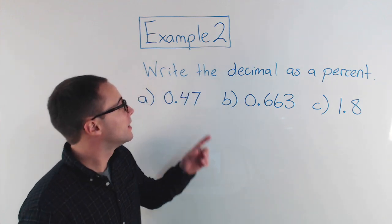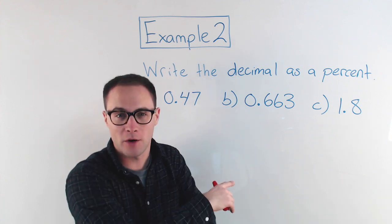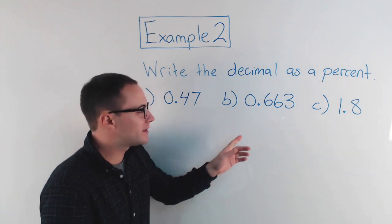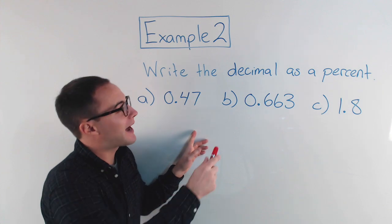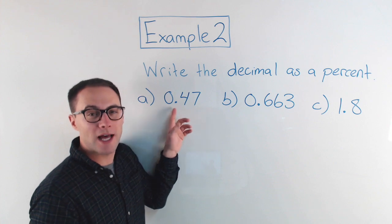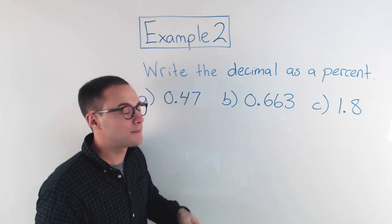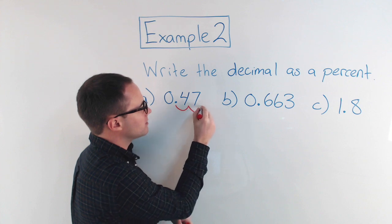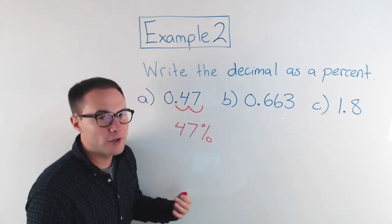Here's example two: write the decimal as a percent. Now we're going the other direction — instead of percent to decimals, we're going decimals to percent. If you remember, from percent to decimal we moved the decimal point twice to the left. So going the other way, I'm just doing the opposite: moving it twice to the right, and then adding the percent symbol at the end. So 0.47 as a percent — move it once, twice — becomes 47 percent. Really simple.